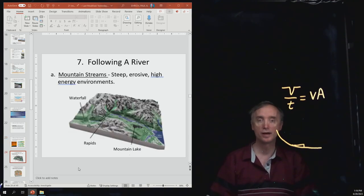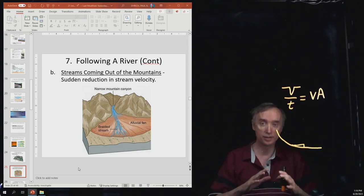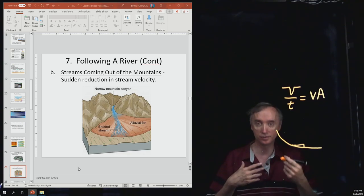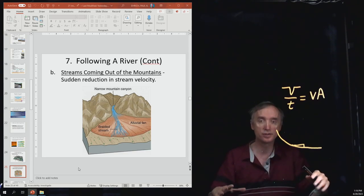Characteristics of a mountain stream. You should know that for the exam. What are some characteristics of a stream that comes out of the mountains? Notice that this makes an alluvial fan when it's the equivalent of a delta, but it's on the land. And this is because it slows down, it drops its load, and it starts to deposit material as soon as it comes out of the mountains.